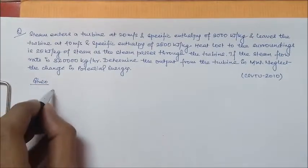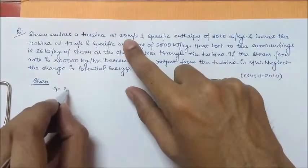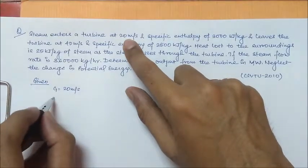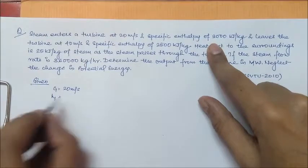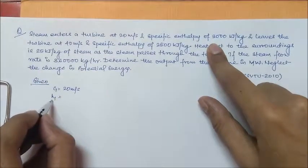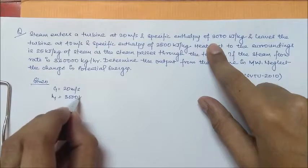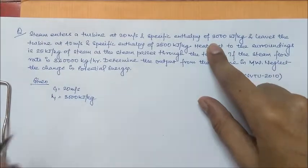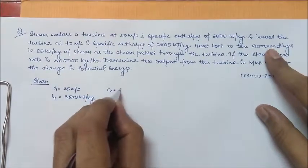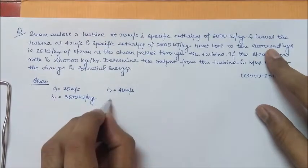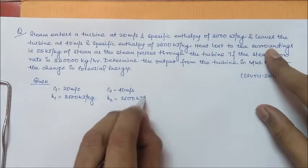The given values: C1 at the inlet is 20 meters per second. The specific enthalpy — specific terms are denoted by small letters — h1 is 3000 kilojoule per kg. At the outlet, the speed C2 is 40 meters per second, and specific enthalpy h2 is 2500 kilojoule per kg.